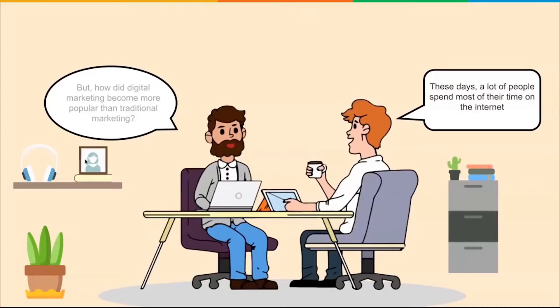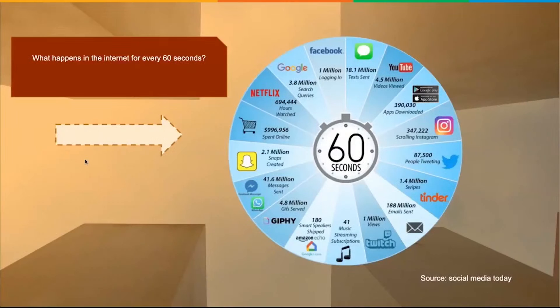These days, a lot of people spend most of their time on the internet. So what happens on the internet every 60 seconds? According to Social Media Today, a lot happens: there's a lot of snaps, clicks, texts, videos watched, pictures being taken, voice-activated activity, tweets, emails, and swipes. There's a lot going on here in 60 seconds — a lot of activity on the internet.